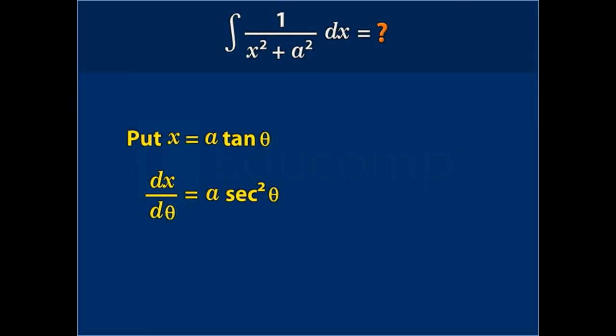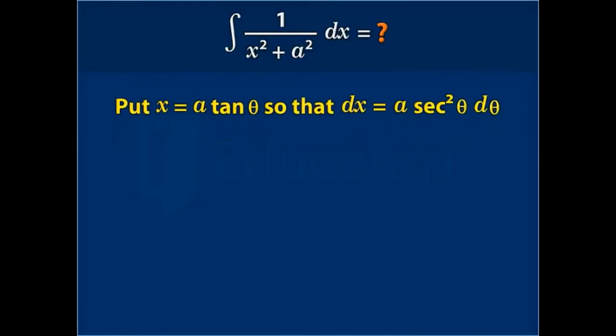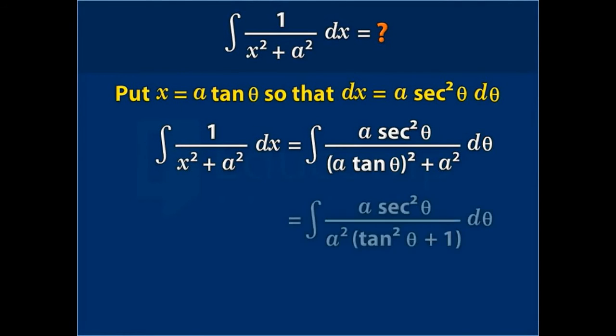Now rewrite the given integral in terms of θ and dθ. In the denominator, if we take a² as common and substitute sec²θ for tan²θ + 1, we are left with (1/a) ∫ dθ.